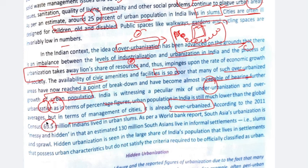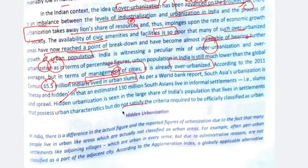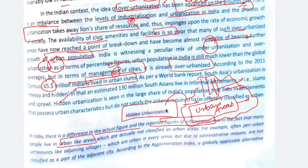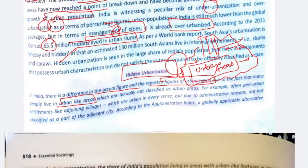According to the 2011 census, 65.5 million Indians live in urban slums. They are counted as living in urban areas, but their quality of life shows no improvement. Hidden urbanization is also a problem in India — there is a difference in the actual and reported figures of urbanization, because many people live in urban-like areas which are not administratively classified as urban areas. Any area adjacent to an urban area that is developed in an urban-like manner but is not officially declared urban — this is called hidden urbanization.